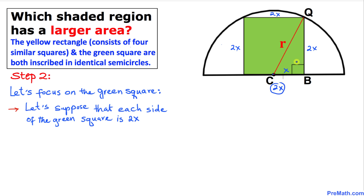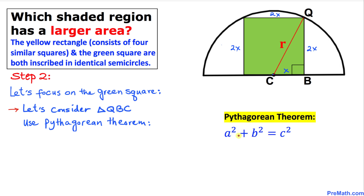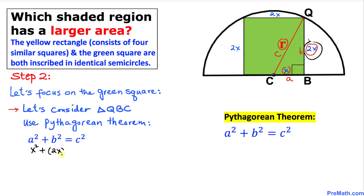Now let's consider triangle QBC. This is a right triangle, so we use the Pythagorean theorem: a² + b² = c². The hypotenuse c is r, side a is x, and side b is 2x. Filling in: x² + (2x)² = r², which gives us x² + 4x² = r², so 5x² = r².